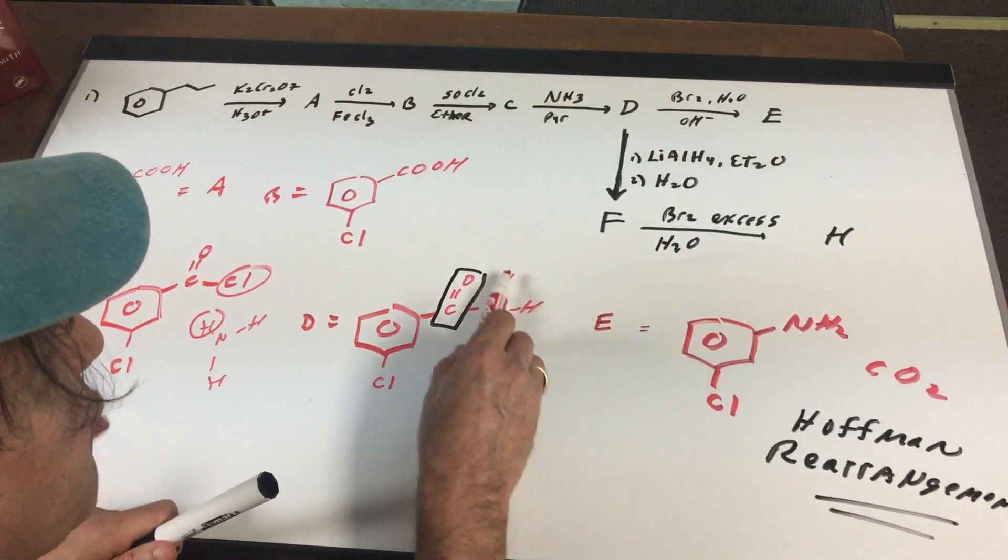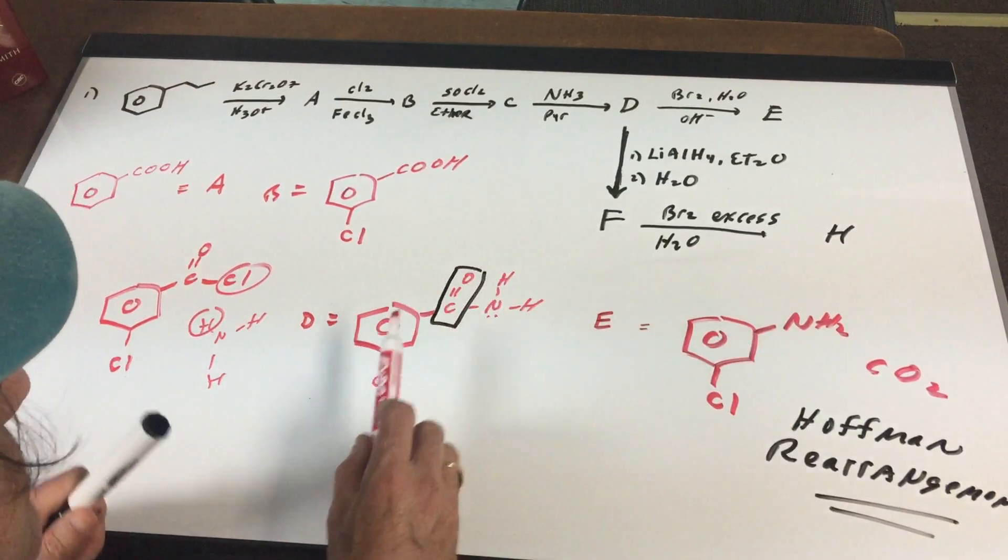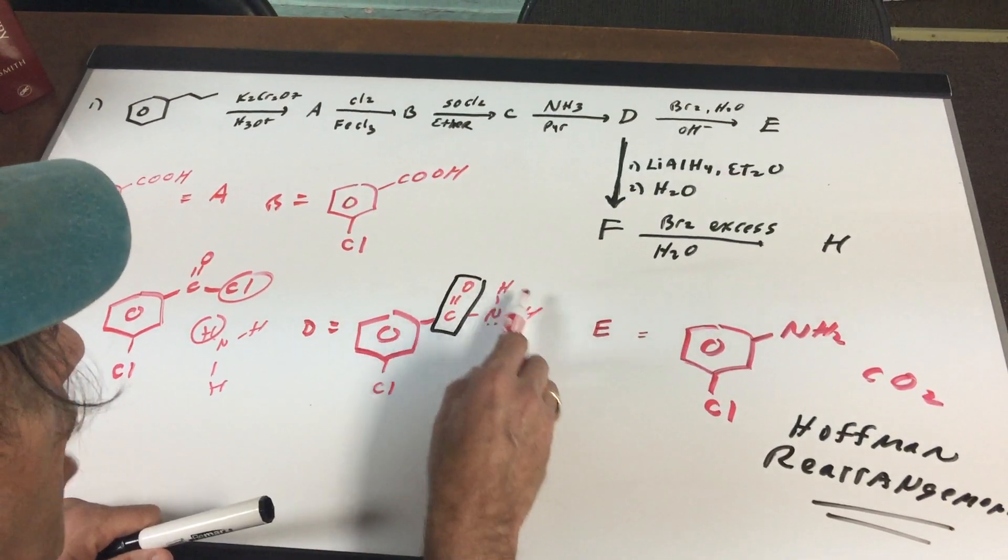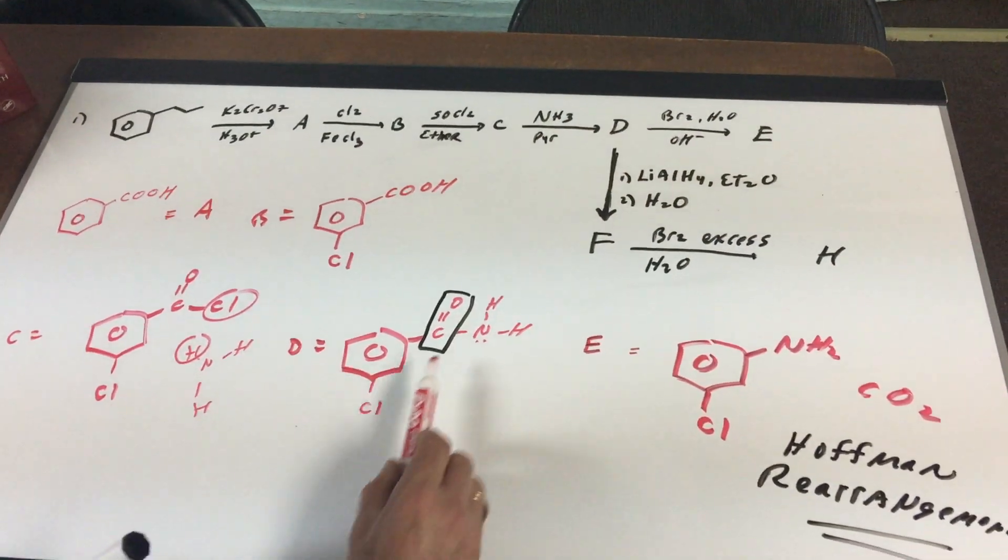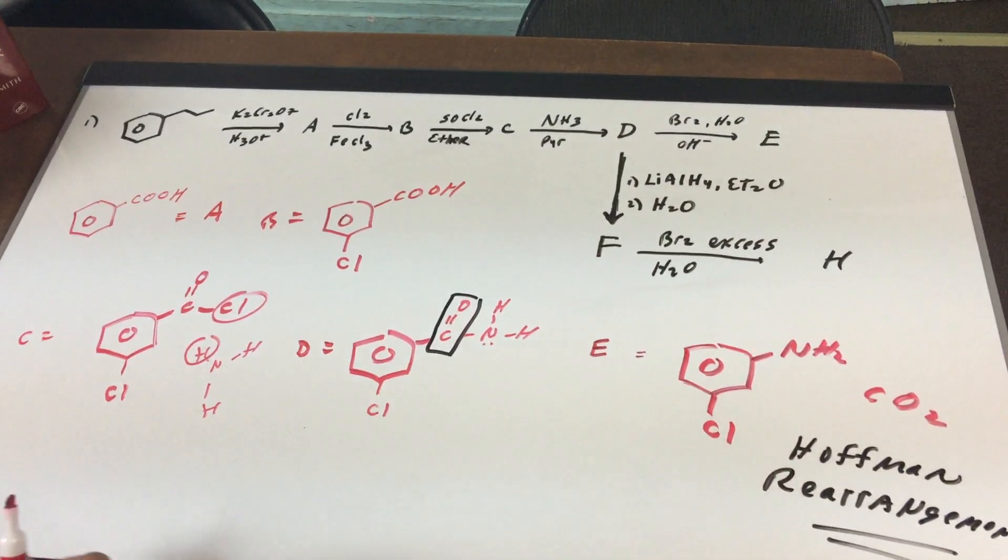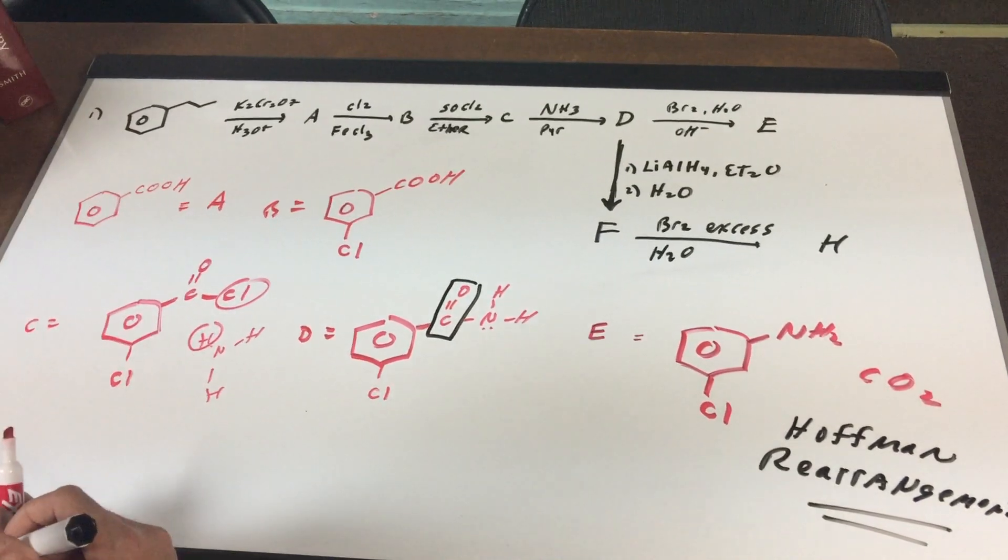It can't be substituted. So you have a primary amide with bromine base aqueous. You're going to remove the CO2 and get the NH2 group. That was a hard one.